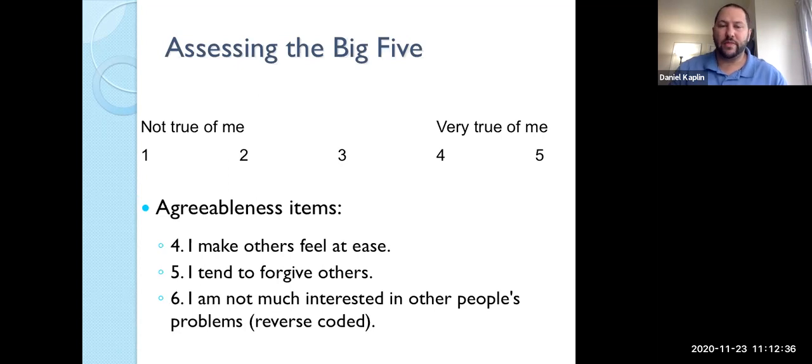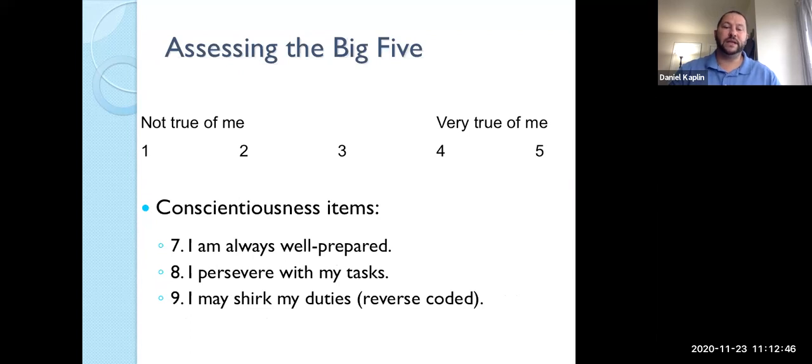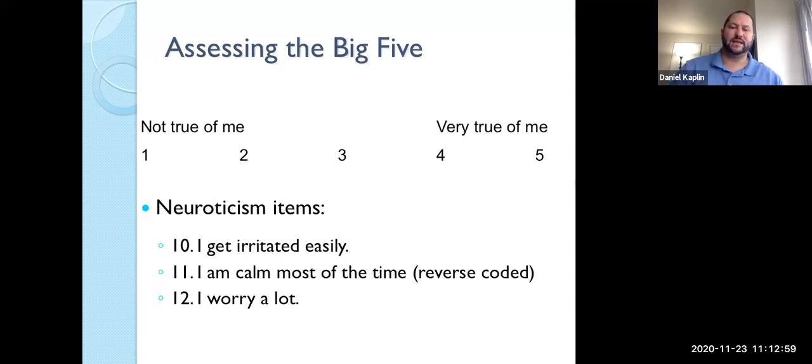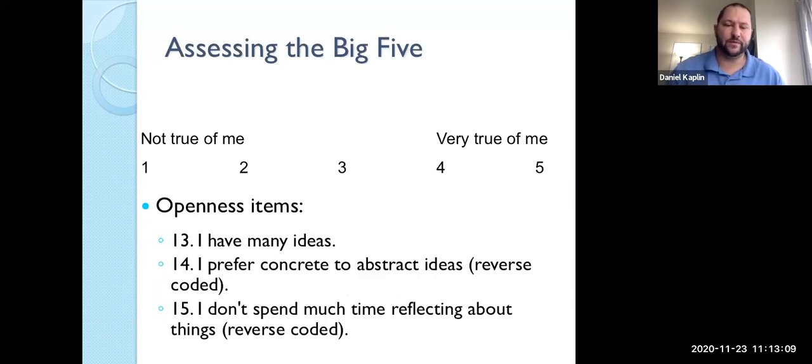So let's look at some questions that assess extroversion. So I talk a lot. So you rate that from one to five. So if you say very true of me, that leads you towards extroversion. I'm quiet around strangers. Well, that wouldn't be an extrovert. That would be an introvert. So that would be reverse coded. So saying not true of me would actually make you more extroverted. And I'm the life of the party. Obviously, that's extroversion. Agreeableness. I make others feel at ease. I tend to forgive others. I'm not interested in other people's problems, which would not be agreeableness. This would be more quarrelsome. Conscientiousness. I'm always well prepared. I persevere on my task. I may shirk my responsibilities, which means to skip out and not do. That would be reverse coded. Neuroticism is I get irritated easily. I'm calm most of the time. Well, that would be a person who's not neurotic. And then I worry a lot. And then openness. I have many ideas. I prefer abstract ideas. And then I don't spend much time reflecting on things. And so this is the depth of creativity and curiosity we're looking at.